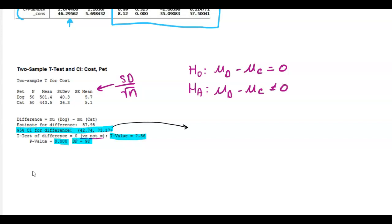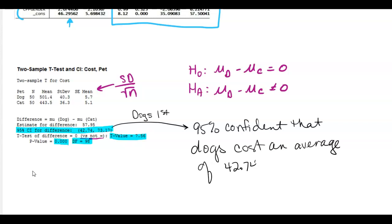This confidence interval. So because they did dogs first, that's saying that dogs cost between $42.74 and $73.17 more, maybe per month, per year, we don't know. So we're 95% confident that dogs cost an average of $42.74 to $73.17 more than cats.